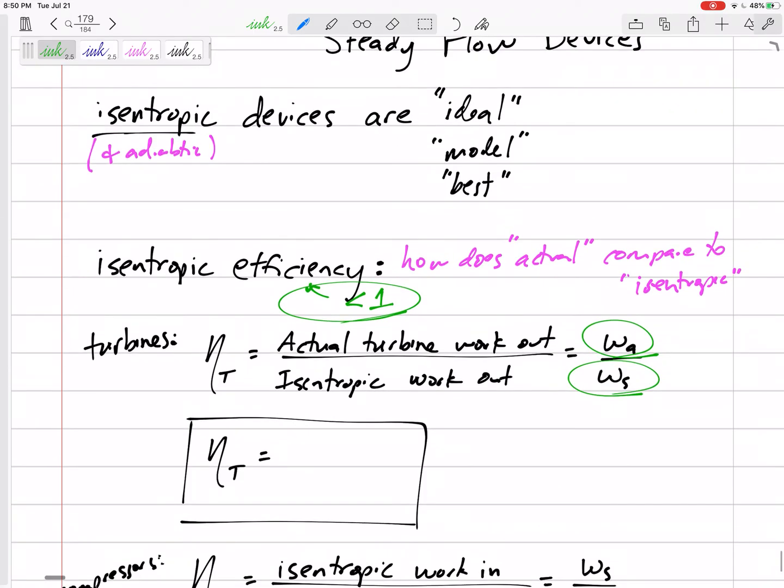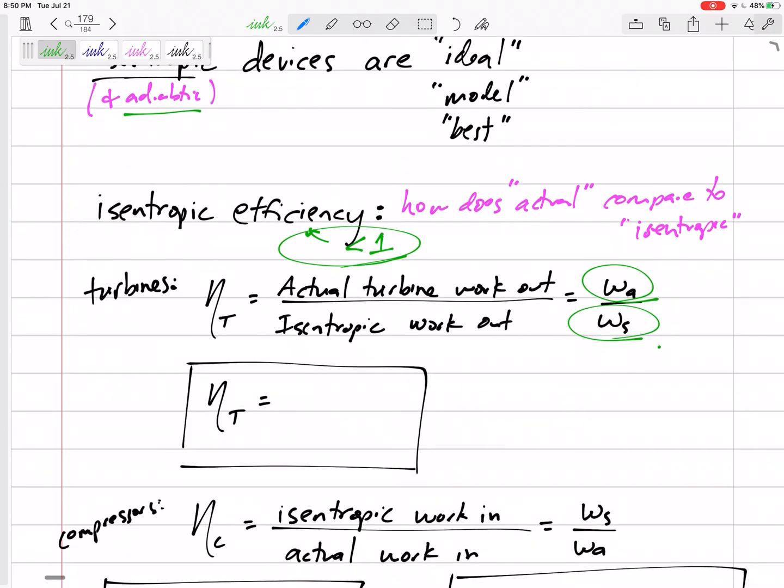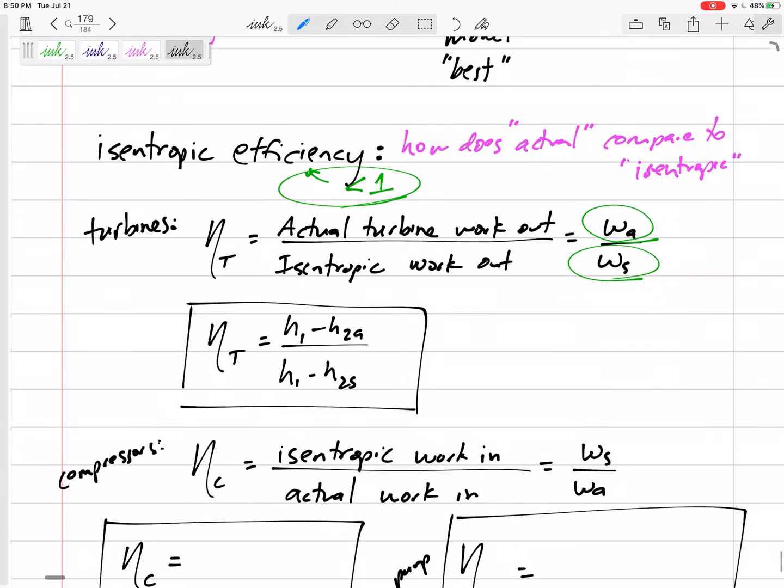For turbines with no Q, the work actual over work isentropic is expressed as enthalpies: H1 minus H2 actual over H1 minus H2 isentropic. The M dot on top and bottom cancels because it's a steady flow device with one inlet and one outlet. So it's really the change in H. Generally for turbines, the initial H is larger than the final H. This is what the enthalpy actually is at state two, at the outlet. This is what the enthalpy would be at state two if it was isentropic.